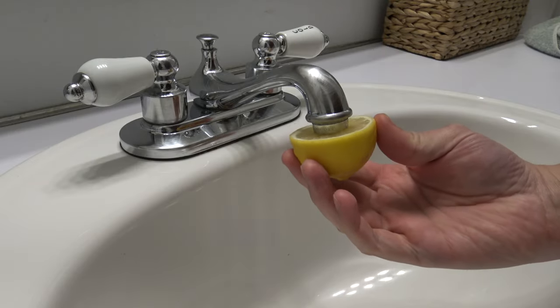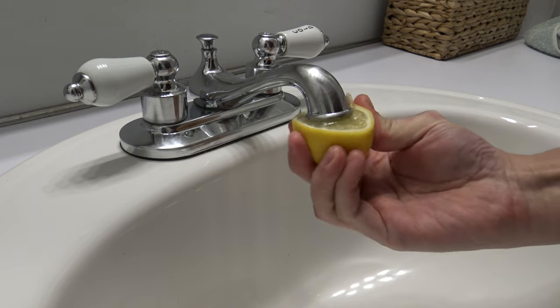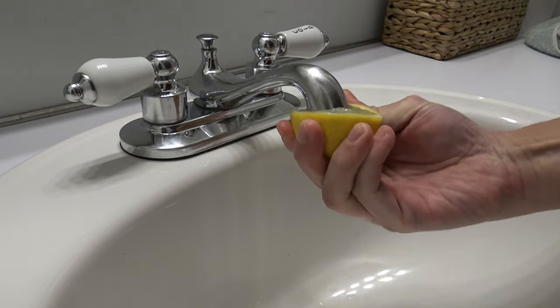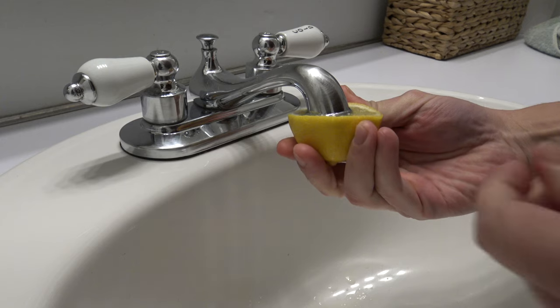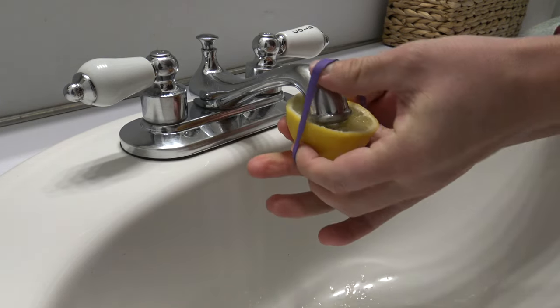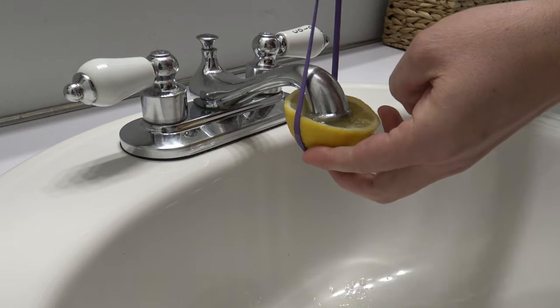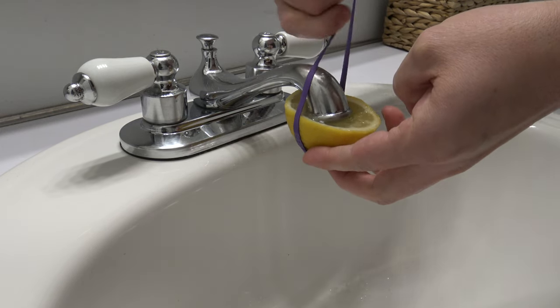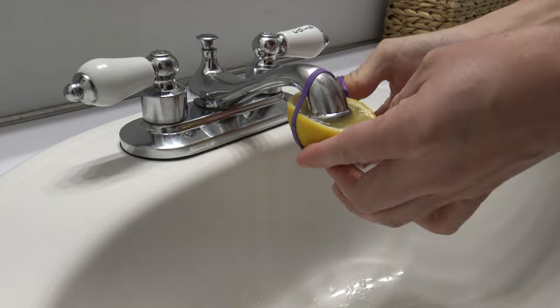So cut a lemon in half, then submerge the end of the faucet down into the lemon. After you have set the lemon in place on the faucet, use a rubber band to hold it so it doesn't fall off. The idea is that you want the end of the faucet to always be in contact and touching the lemon.